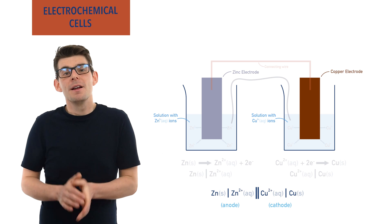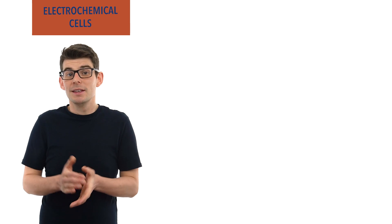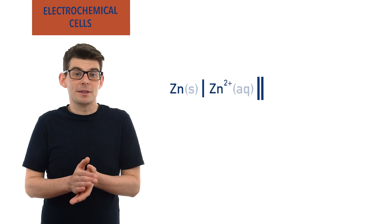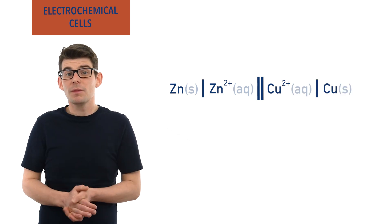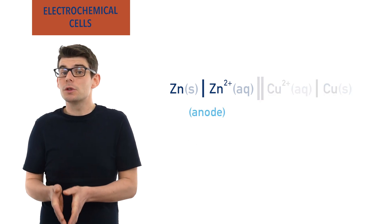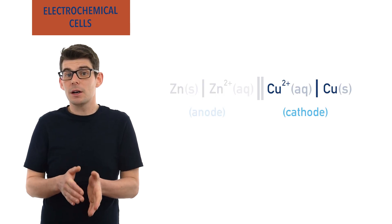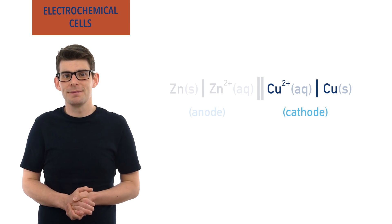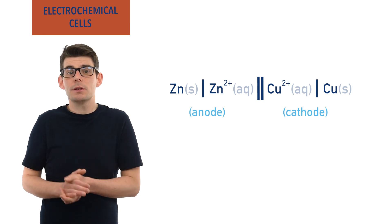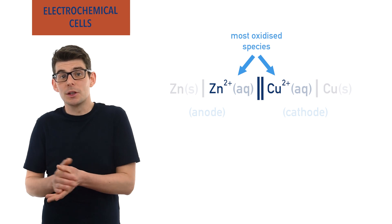For example, the zinc and copper electrochemical cell shown earlier would be represented as: Zn(s) | Zn²⁺(aq) ‖ Cu²⁺(aq) | Cu(s). This is because the anode where oxidation happens is the zinc half cell, meaning it goes to the left of the salt bridge, and the copper half cell is the cathode where reduction happens, meaning that half cell must go to the right of the salt bridge. The products of oxidation — the most oxidized species — always go closest to the salt bridge. This would be Zn²⁺ in the zinc half cell and Cu²⁺ in the copper half cell.